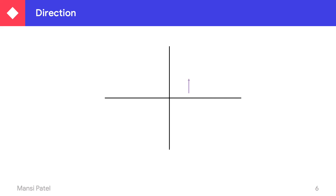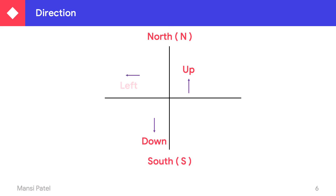Now let us review directions. In our previous lecture we already studied that when we move upward there is the North direction; when we move downward there is South; when we move to the left-hand side there is West; and when we move to the right-hand side there is East. Please remember this, because with the help of this we have to solve some sums.